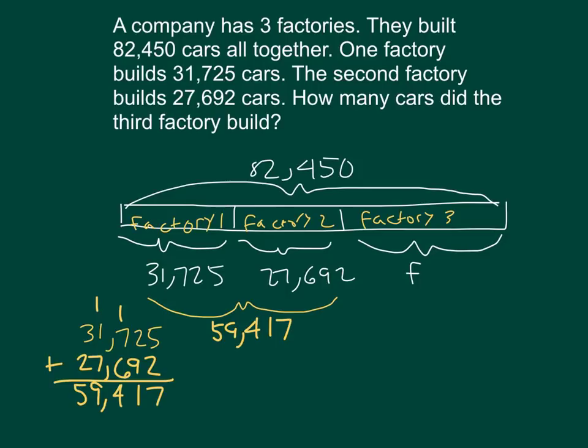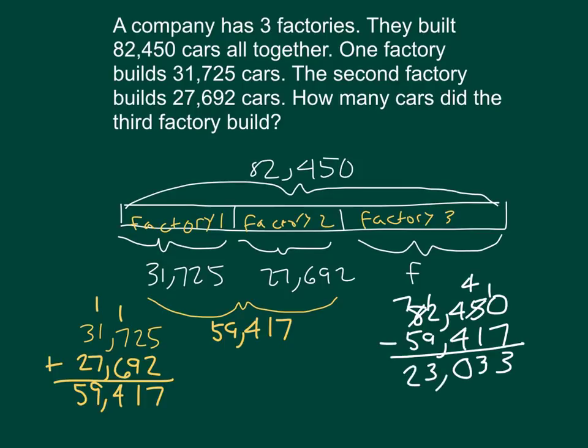To figure out factory three, I need one more step, and that step is to take all of the cars and subtract the 59,417, which I'll show right on over here. So, I cannot do zero minus seven, so the five becomes a four, the zero becomes ten, and then I can continue with that standard algorithm. So, factory three, and that F is equal to 23,033 cars.